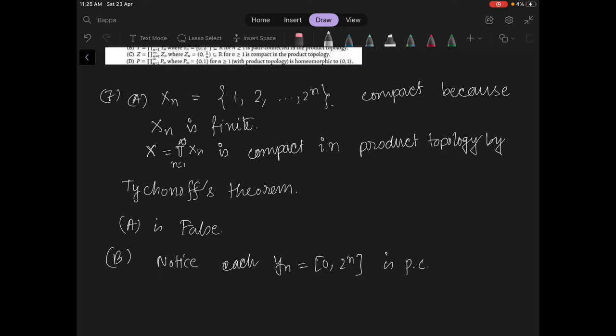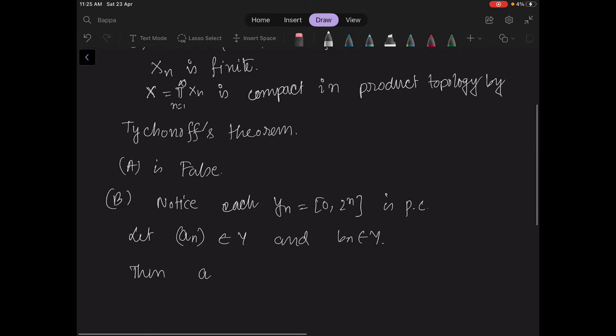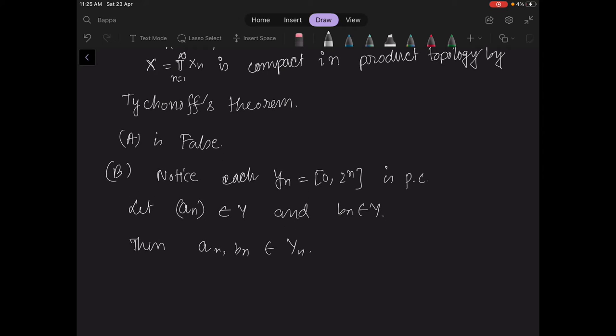Now let an in y and bn in y. When yn is path connected, that means there exists gamma n from 0,1 to yn such that gamma n, this is a continuous map of course, such that gamma n of 0 equals an, gamma n of 1 equals bn.